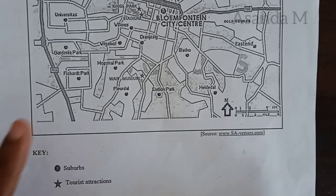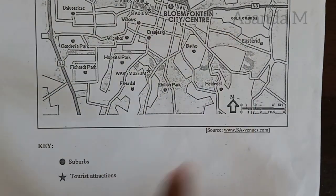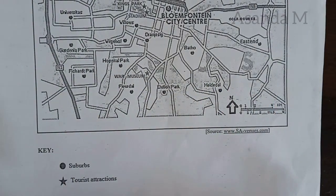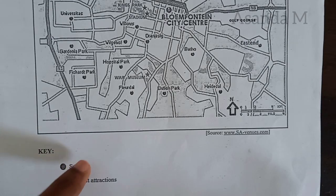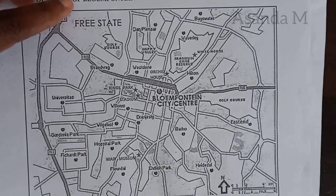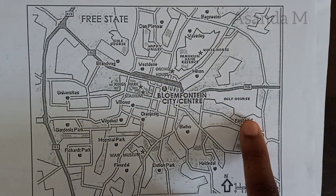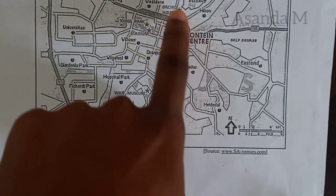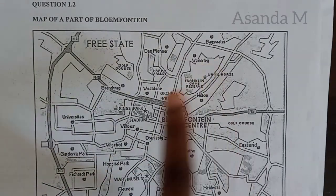The first thing I look for on my map is the direction of north - this one is pointing straight up. Then I look for my scale; the type is a line scale or bar scale. I also check for any keys: this one has dots for suburbs and a star for tourist attractions. Looking at the map, I can see the N1, the N8, and the city center, along with all the suburbs marked with dots.